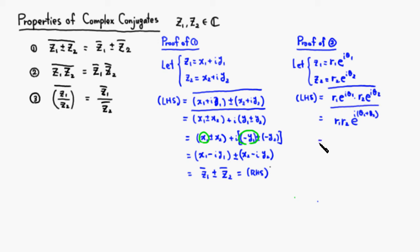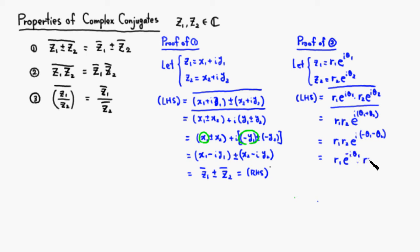Remember that when you take the conjugate of an exponential function, you just negate the angle. So we get r1·r2·e^(−i(θ1+θ2)), which splits into r1·e^(−iθ1) times r2·e^(−iθ2). You can see this is z1-bar times z2-bar — the right-hand side of property two.